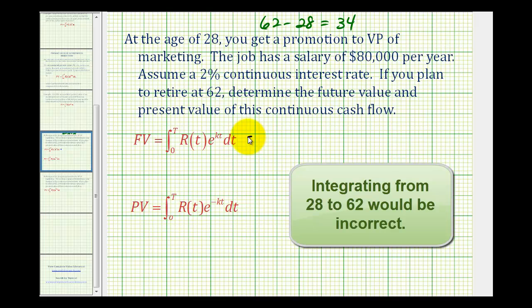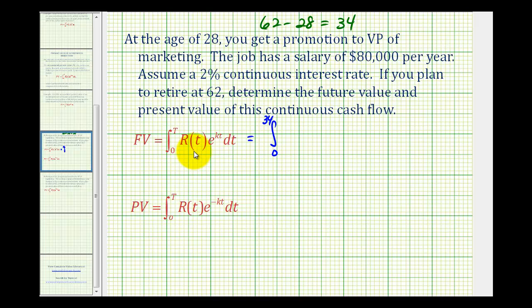So the future value is going to be equal to the integral from 0 to 34 of R(t), which is our continuous money flow of $80,000 per year, times e raised to the power of Kt, where K is the interest rate expressed as a decimal. So we'll have 0.02t dt.